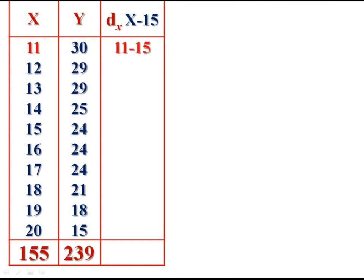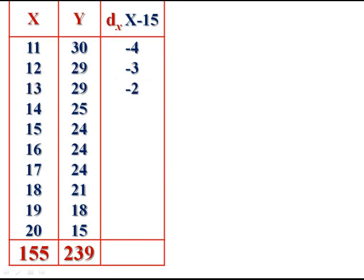First: 11 minus 15, we get minus 4. 12 minus 15, minus 3. 13 minus 15, minus 2. And so on: minus 1, 0, 1, 2, 3, 4, 5. Get its summation. We get sigma dx equal to 5.